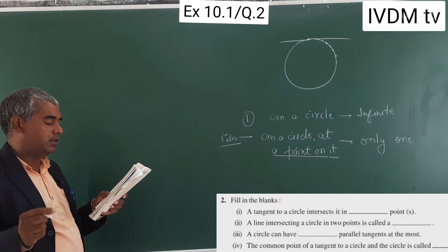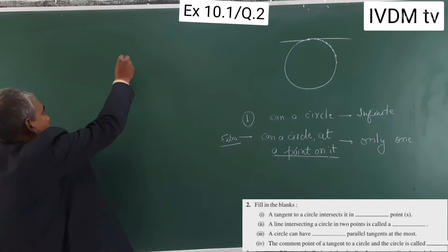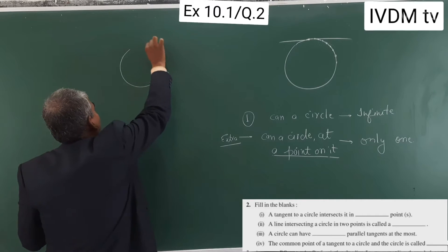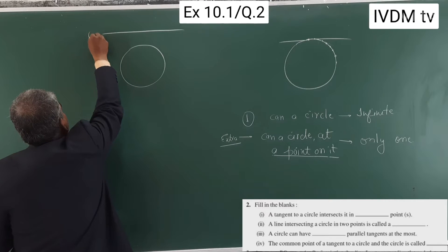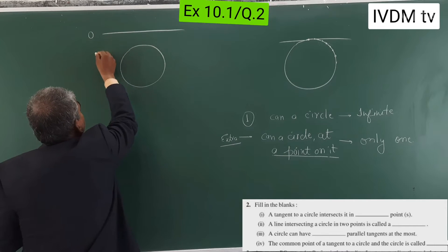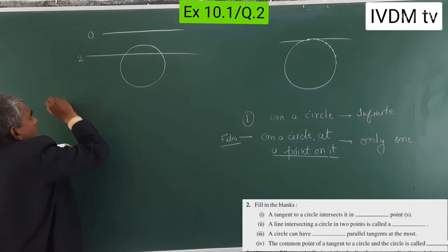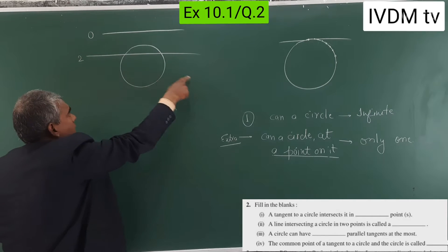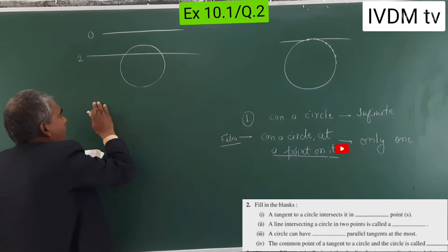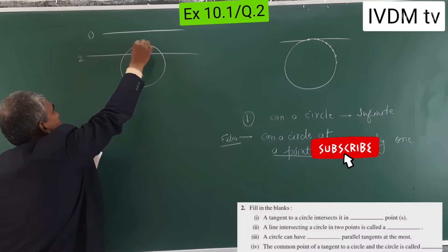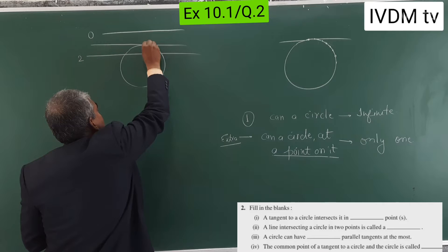A tangent to a circle intersects it in — this is a line cutting the circle at 0 points, no point. This is another line cutting the circle at 2 points. So can we have one point also? Yes, that is the tangent.